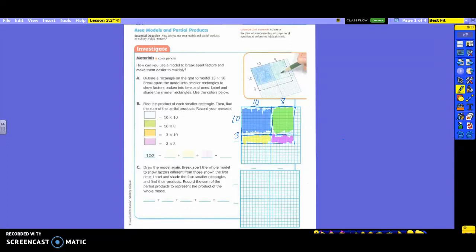So quickly get those shaded in the correct colors. Make sure you understand where they're getting the blue. The 10 times 10. The green is the 10 times the 8. The yellow is 3 times the 10. And your purple is 3 times 8. So you're using your area model, or your array, as you've been calling them before.